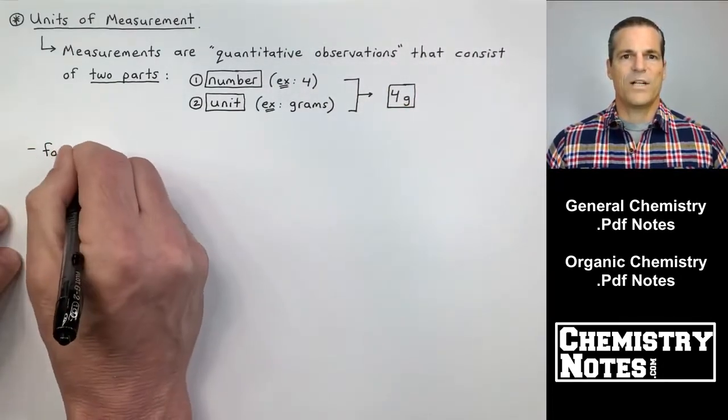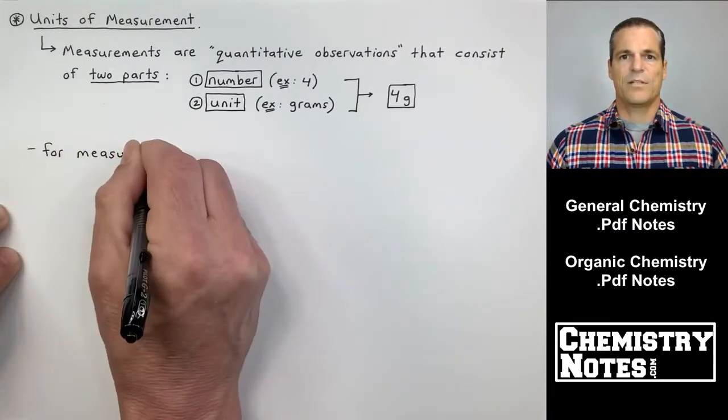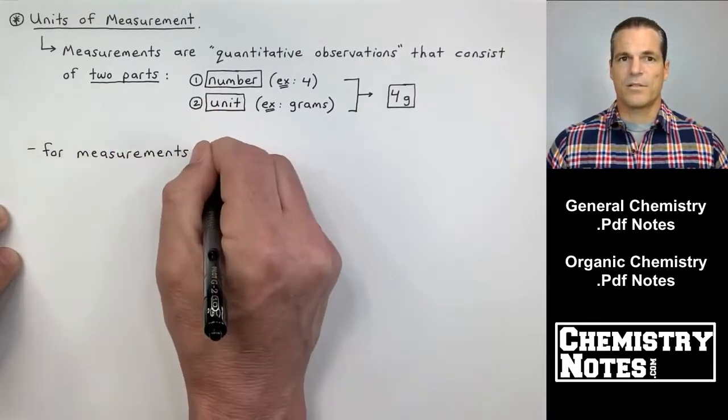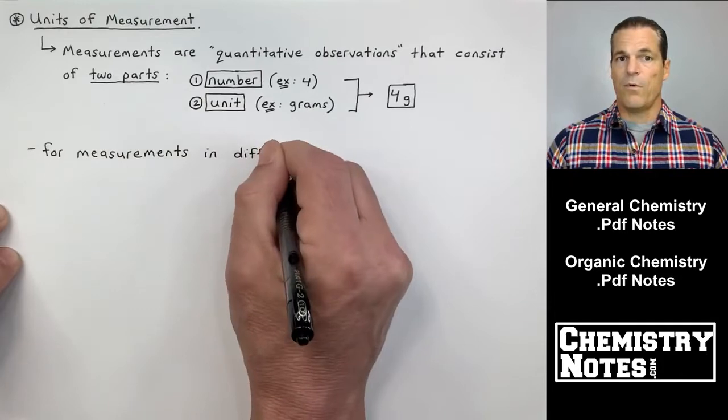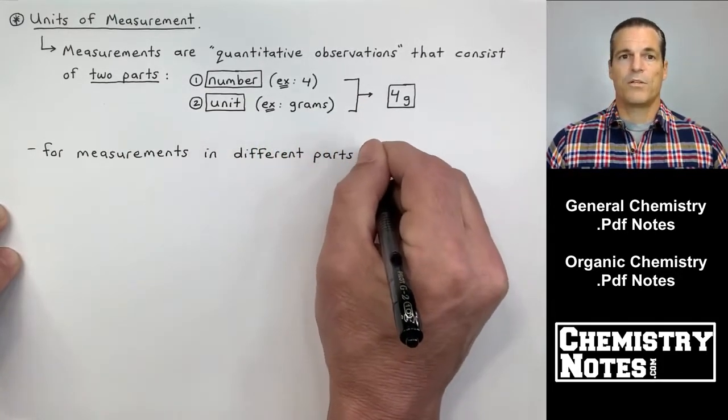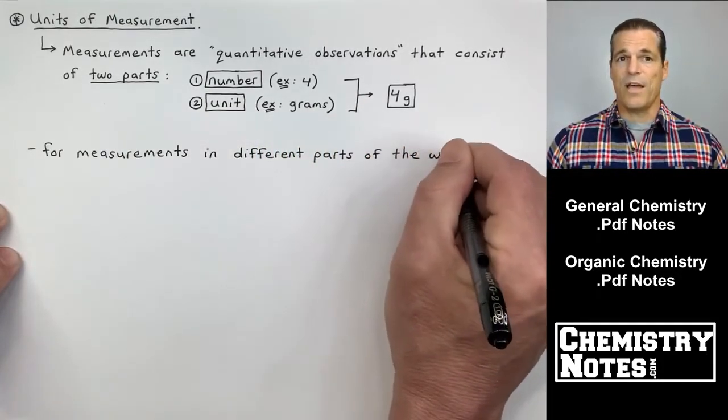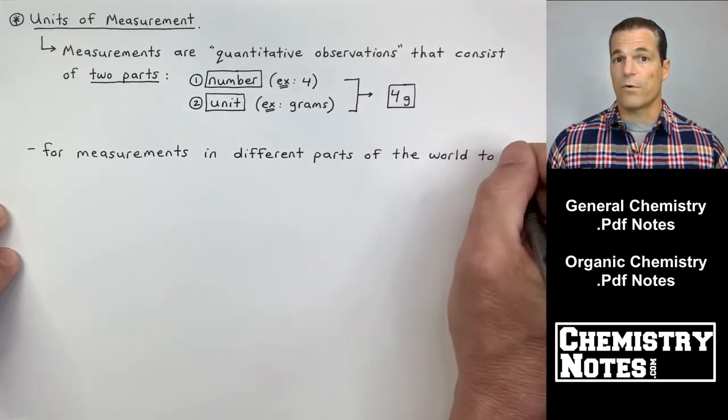Measurements are quantitative observations that consist of two parts. A number, for example, four, and a unit, for example, grams. You put those two guys together and you have a measurement, for example, four grams.